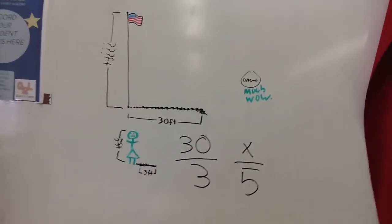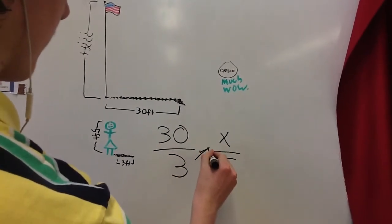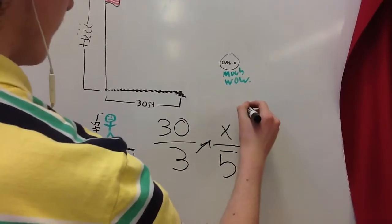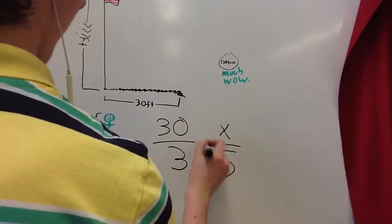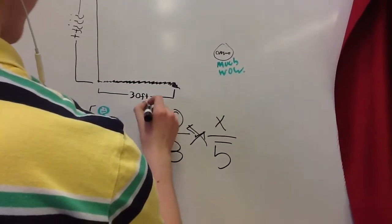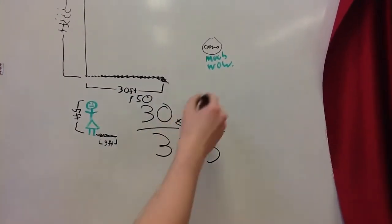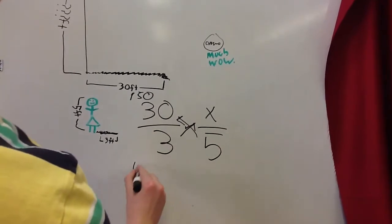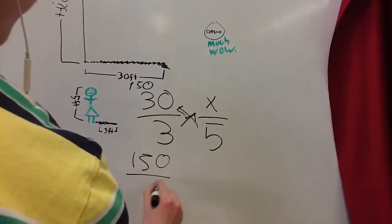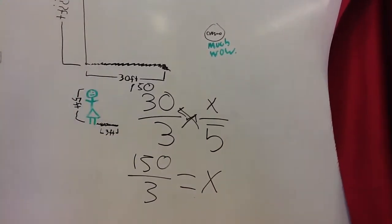Using simple cross-multiplication, we can figure out that this is 150. Divide that by 3. 150 over 3 will be equal to x.